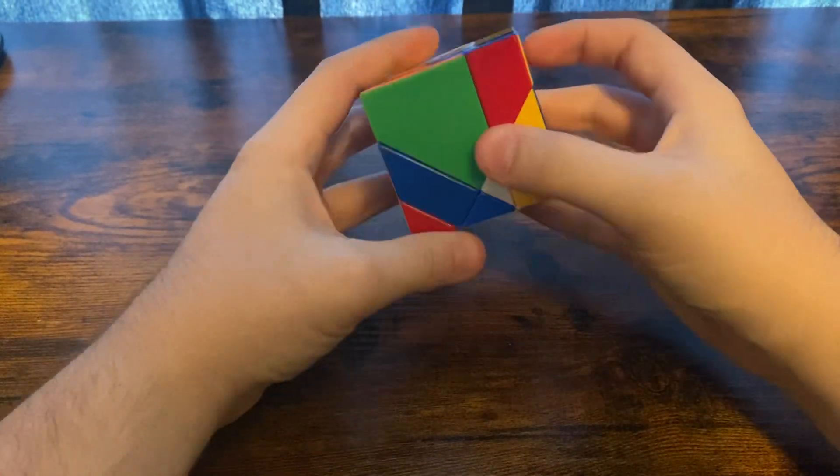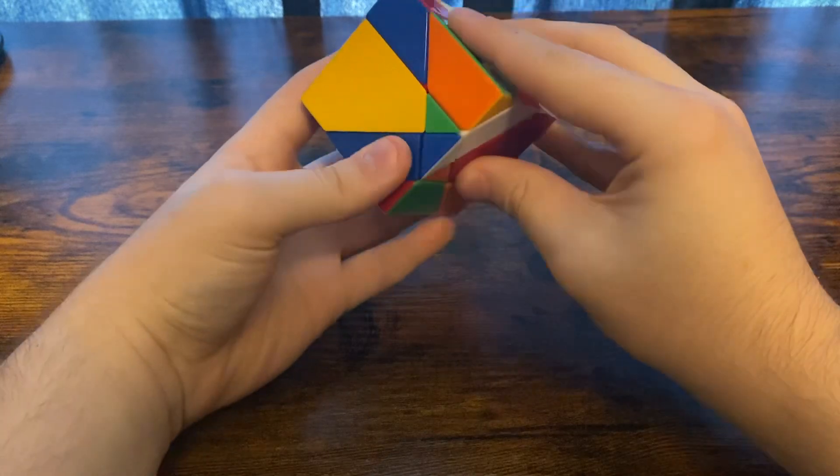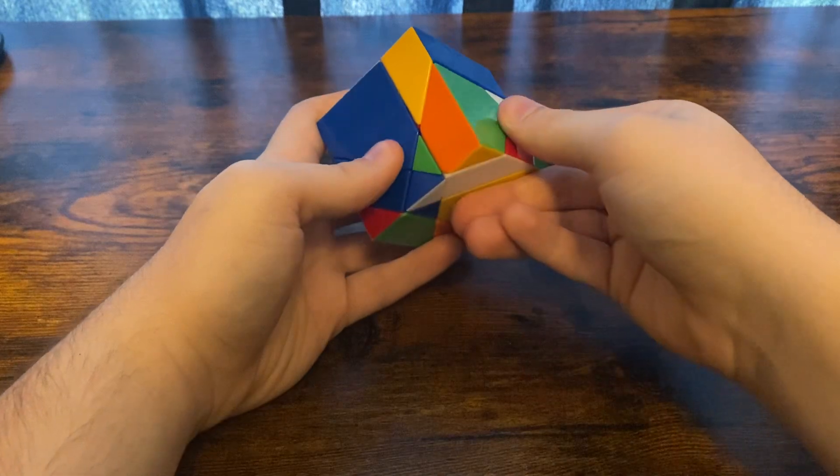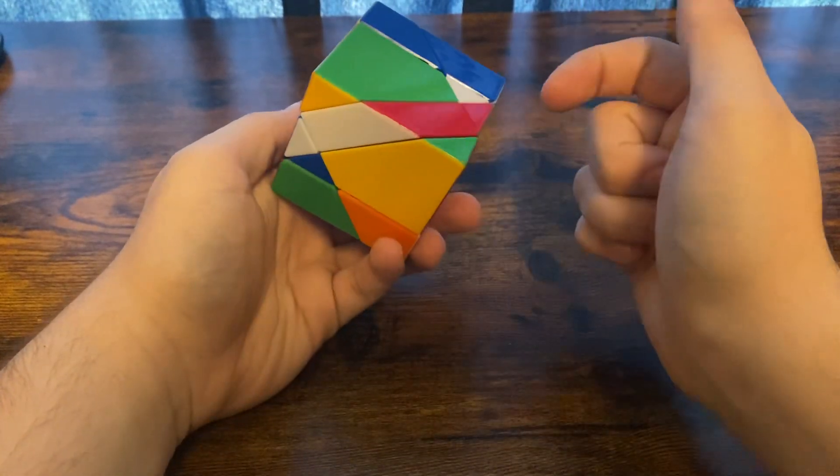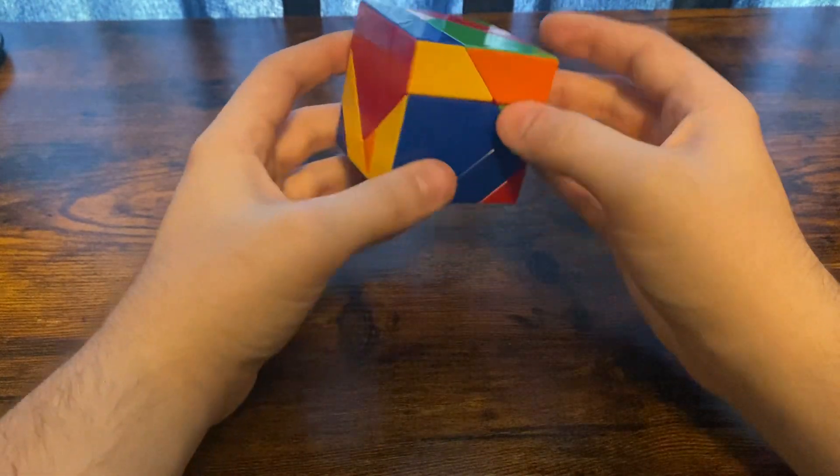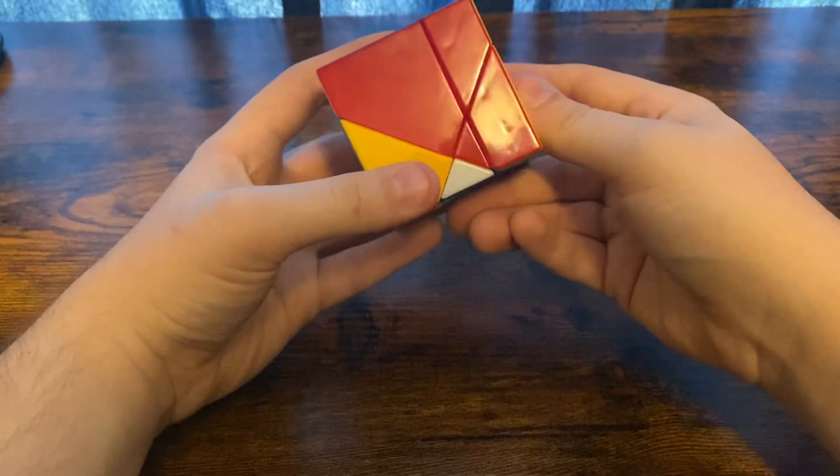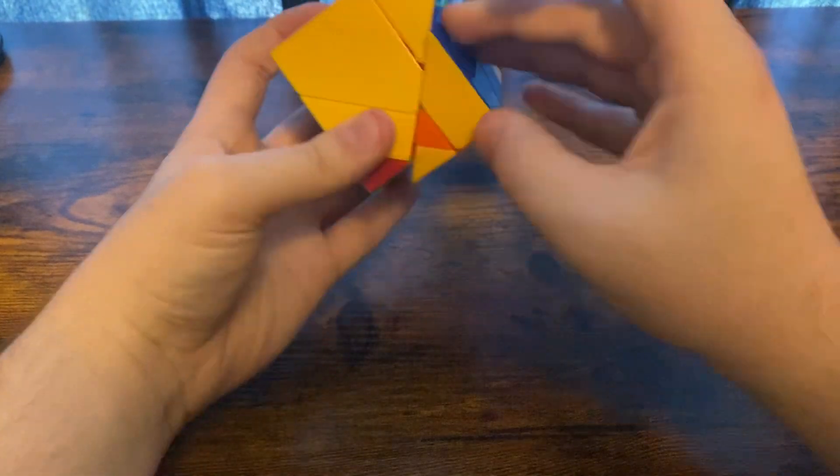We're going to solve two of them and leave the third one open as a buffer. First got this red blue one. We're going to bring it up, move it over, and then bring this back. You want to preserve the middle layer. Then we're going to solve the red yellow one, move it up, bring it over, and bring it back.